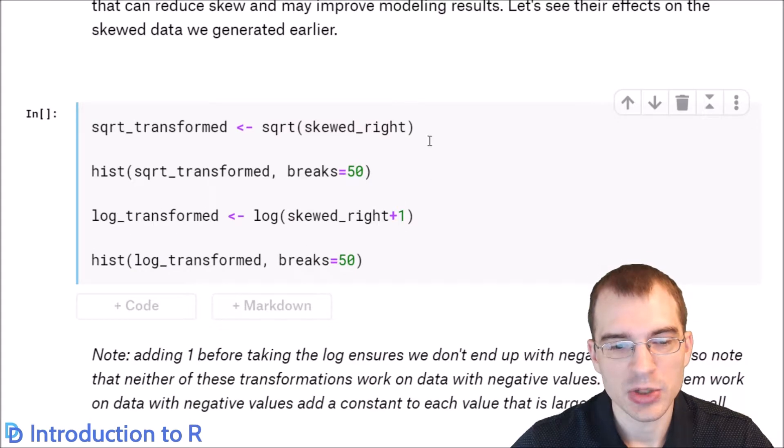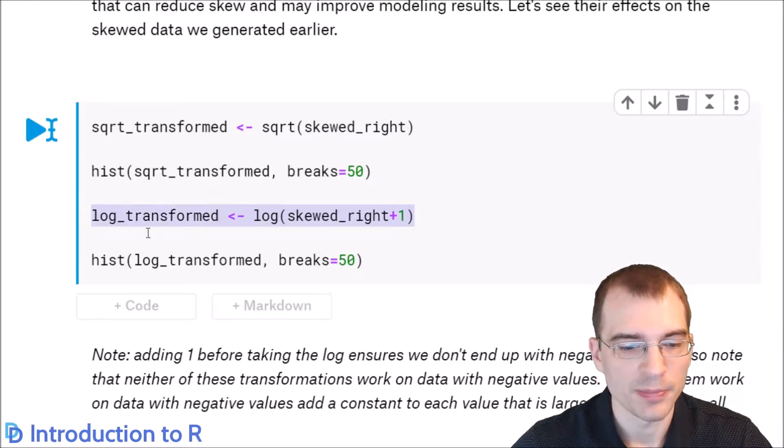One transformation you can do is take the square root of all the values. That is what this square root transform will do and we'll look at a histogram of it. Another thing you can do is take the log transformation. It tends to be a little more aggressive than the square root transformation. We're just adding one so that we don't try taking the log of negative values which won't work. We'll look at a histogram of that as well.